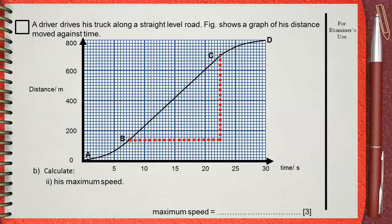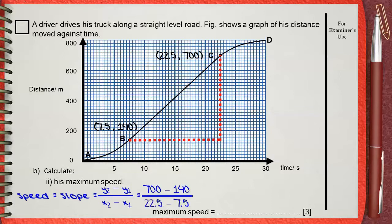Point C has coordinates of 22.5 on the x-axis and 700 on the y-axis. The coordinates of point B are 7.5 on the x-axis and 140 on the y-axis. By finding the slope using y2 minus y1 divided by x2 minus x1, this means 700 minus 140 divided by 22.5 minus 7.5, this gives the final answer of 37.3 meters per second.